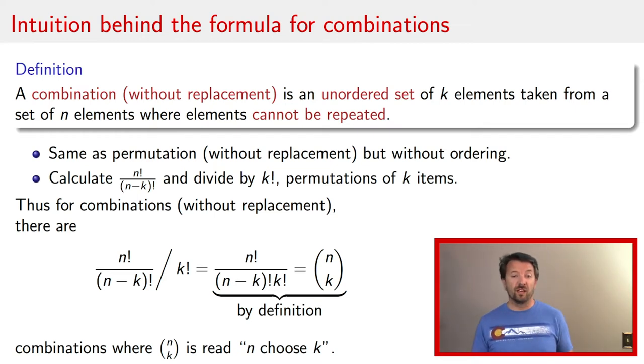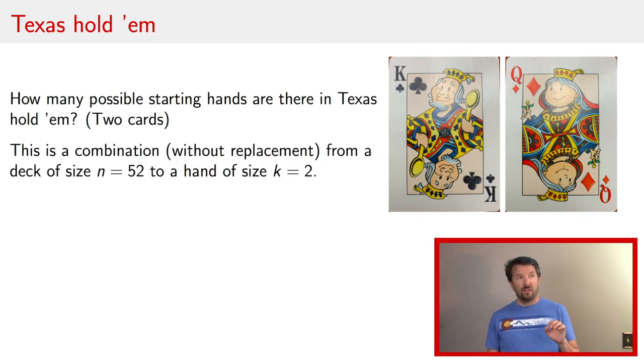So let's use this formula in the context of Texas Hold'em. If you're not familiar with the game of Texas Hold'em, when you're dealt cards in Texas Hold'em, you're dealt two cards out of a standard 52 card deck. And so the question then is how many different possible starting hands are there in Texas Hold'em? So you have an initial deck of 52 cards. So n is 52. You're taking two cards out of the deck. So that's k is 2.